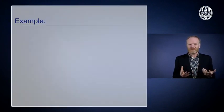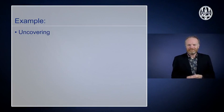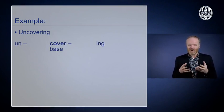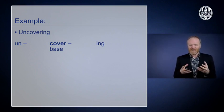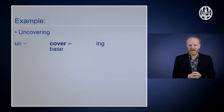So words are hard to define and at the same time we know a word whenever we see one or hear one. Take for example an English word like uncovering. That consists of three parts. There's a base, cover. We call it a base because cover is an independent word in its own right. We can say I cover you, something like that.